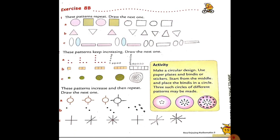Now Exercise 8B. 8B exercise bahut hi simple hai — jo humne second standard mein shapes aur patterns mein kiya tha, same to same waisa hi karna hai. Patterns complete karni hain. This pattern repeats — draw the next one. Circle, square, circle, square — toh humko circle, square, circle, square draw karna hai. Phir triangle, phir inverted triangle, triangle, inverted triangle — aise aapko number one karna hai.